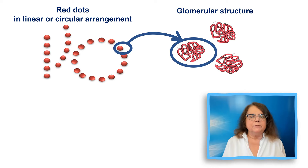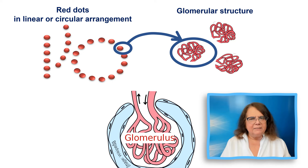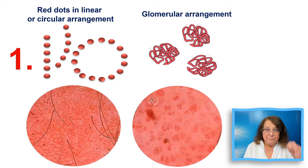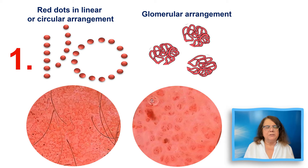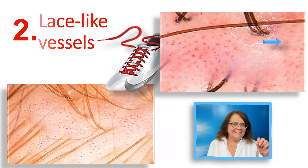The name comes from the glomerulus in the kidney, because the person who described this feature believed that these structures are visually very similar. So the number one feature of scalp psoriasis in trichoscopy is the presence of red dots in linear or circular arrangement with a handheld dermoscope, and with a video or digital dermoscope we will see the glomerular arrangement of the vessels.